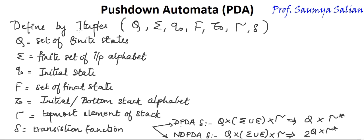PDA is defined by seven tuples. First is Q — the finite set of states. Then sigma — the finite set of input alphabets. Q0 is the initial state. F is the set of final states. Z naught is the initial or bottom stack alphabet. Tau is the topmost element of the stack. And we have a transition function. For deterministic PDA, the transition function is: Q cross sigma union epsilon cross top of the stack goes to Q performing tau star — that is any of the operations: push, pop, and skip.